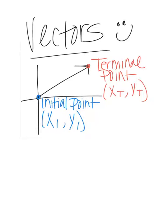A vector is just a quantity that has a length, which is also called the magnitude, and direction. You've probably seen these in physics before or in a science class, and what we are going to do with them for this first iExcel is write vectors in what's called the component form.